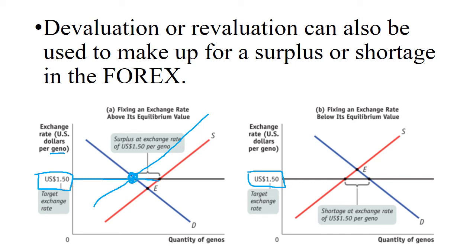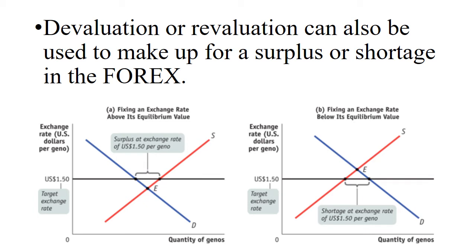On the right model, there is a shortage because equilibrium is above the fixed rate — demand is bigger than supply at $1.50. The government can increase supply by selling its currency, making more available in the foreign exchange market and bringing the price down. Alternatively, if a country is tired of constantly manipulating its exchange rate, it could choose to devalue or revalue to fix the problem directly — lowering the fixed rate is devaluing; raising it is revaluing.